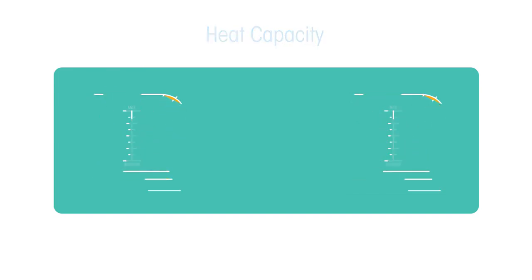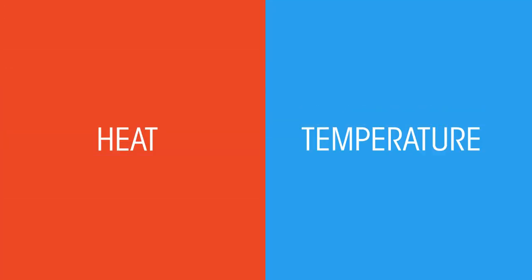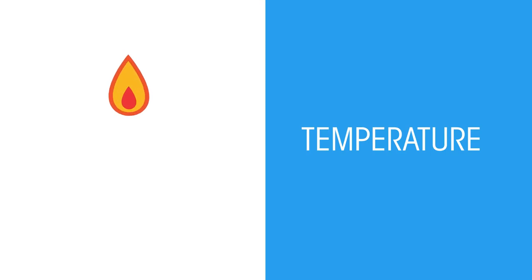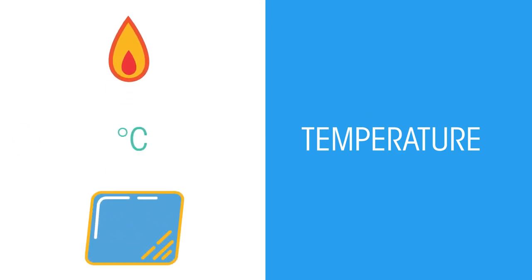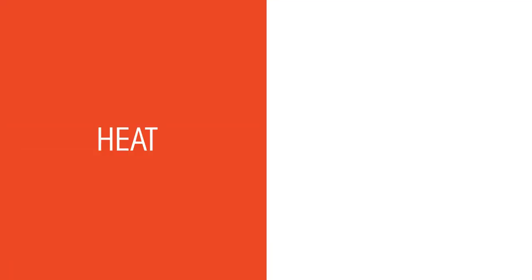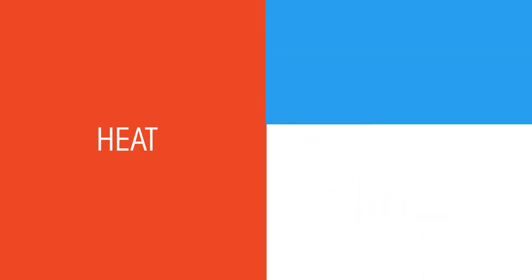Before we get into details, it is important to realize that there is a difference between heat and temperature. Temperature is a way of describing how hot or cold an object is and is measured in degrees Celsius, whereas heat is a form of energy and is measured in joules. The more heat transferred to an object, the more its temperature will rise. So heat and temperature are related, but they are not the same.